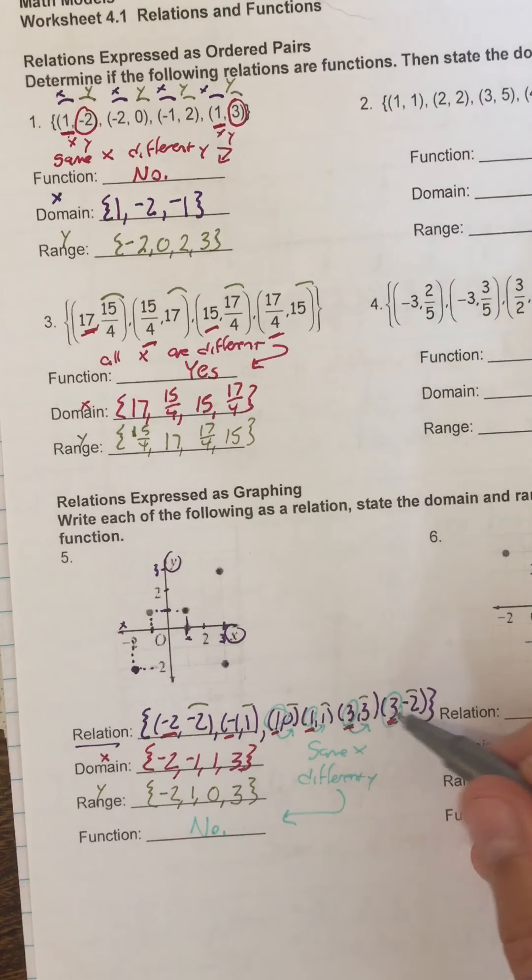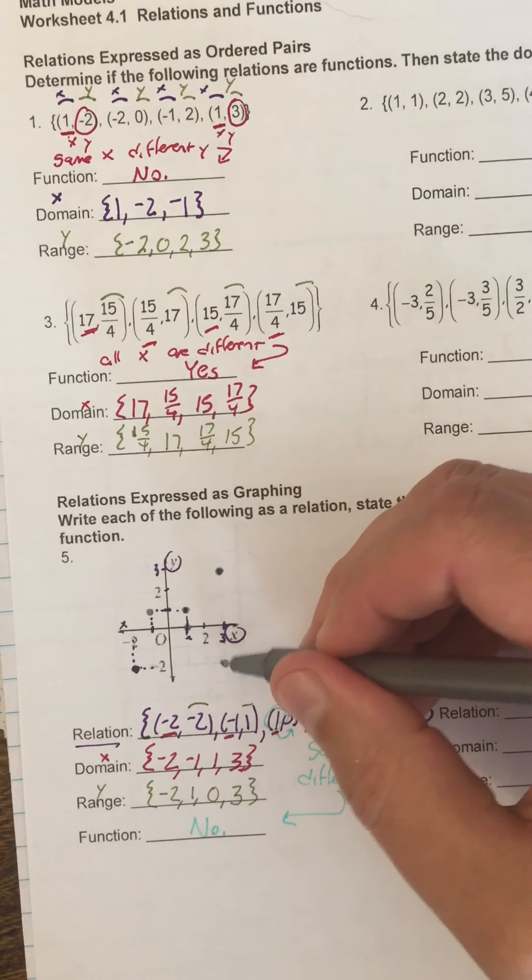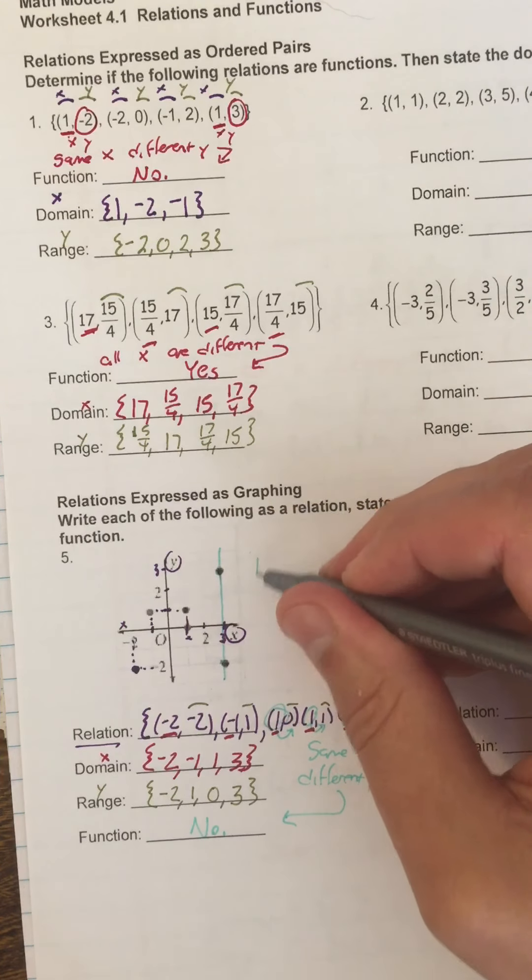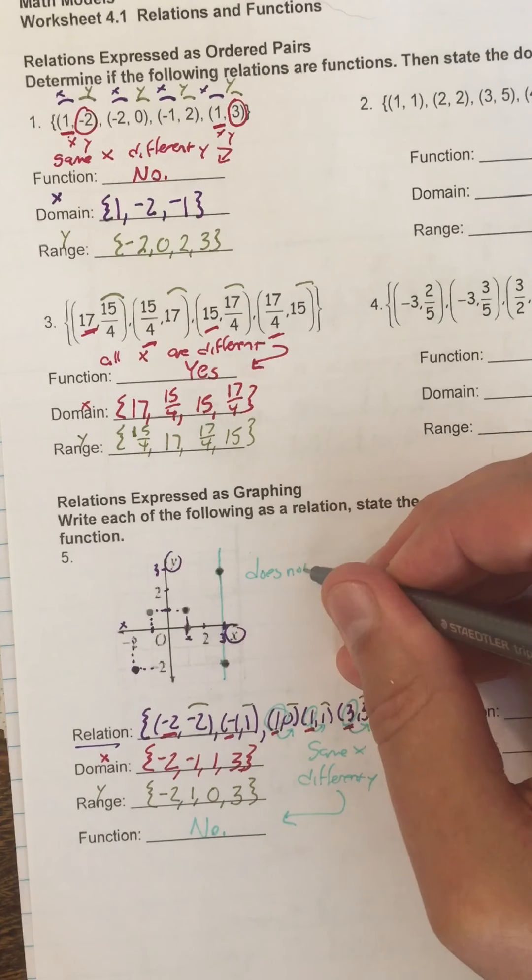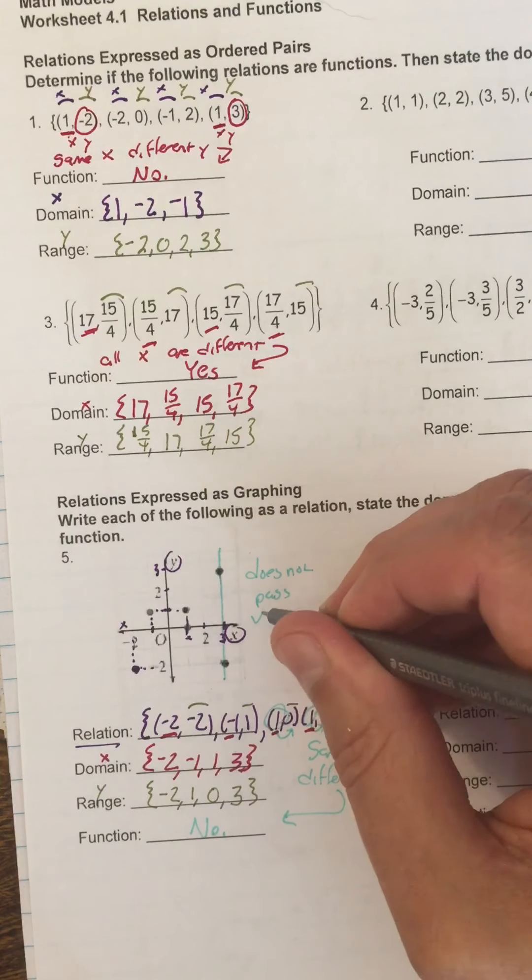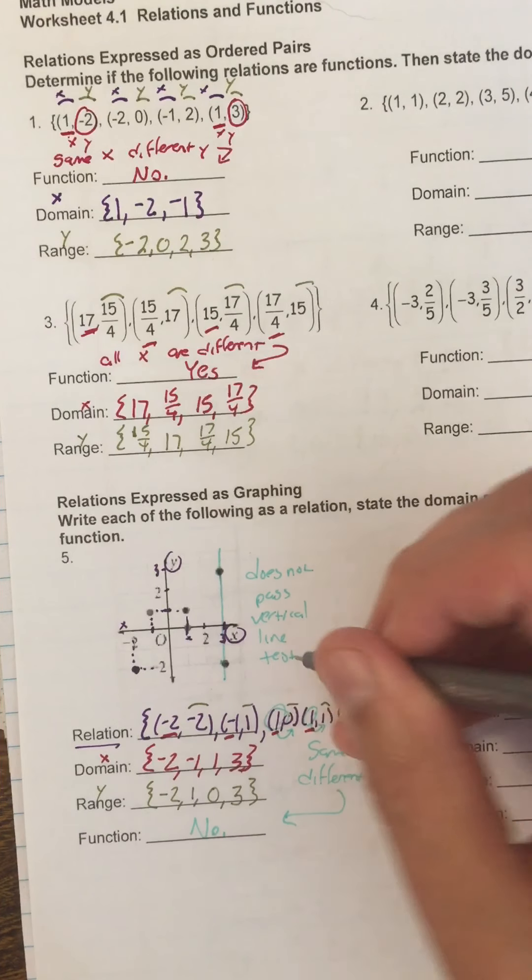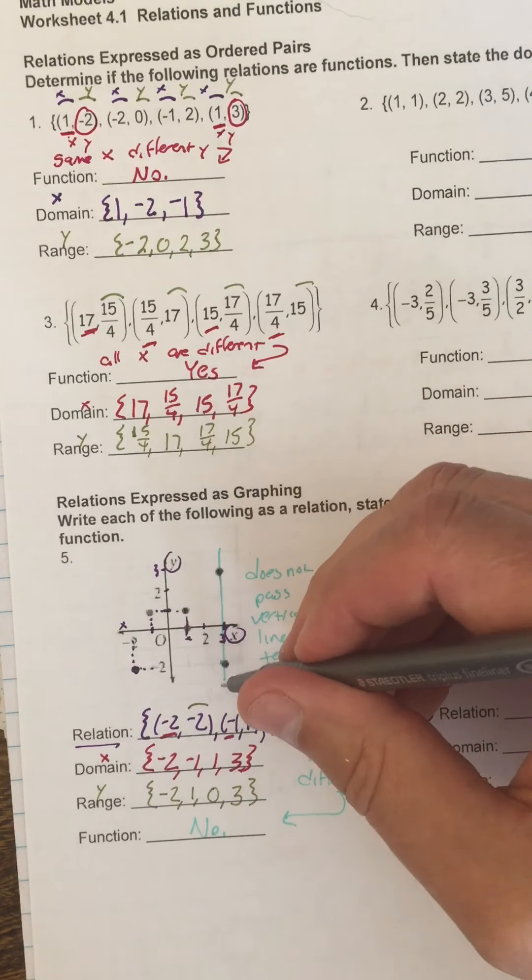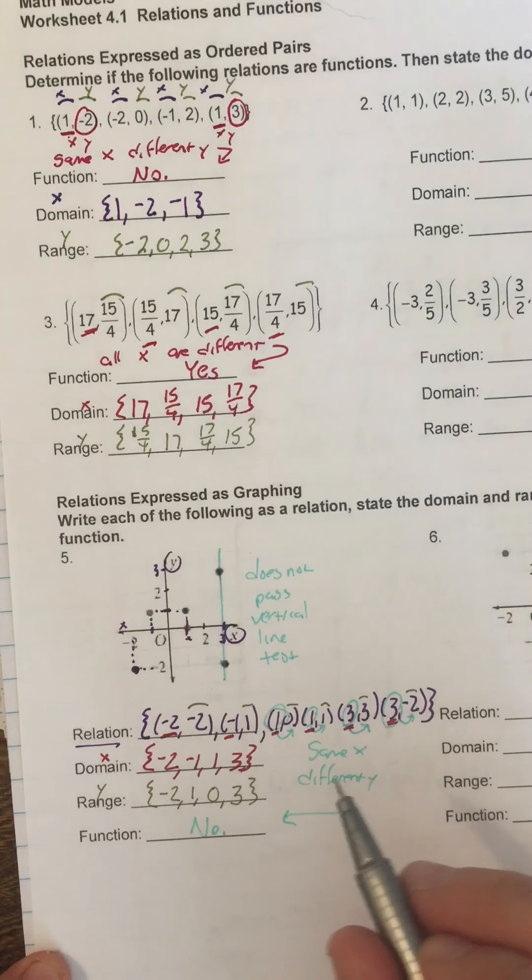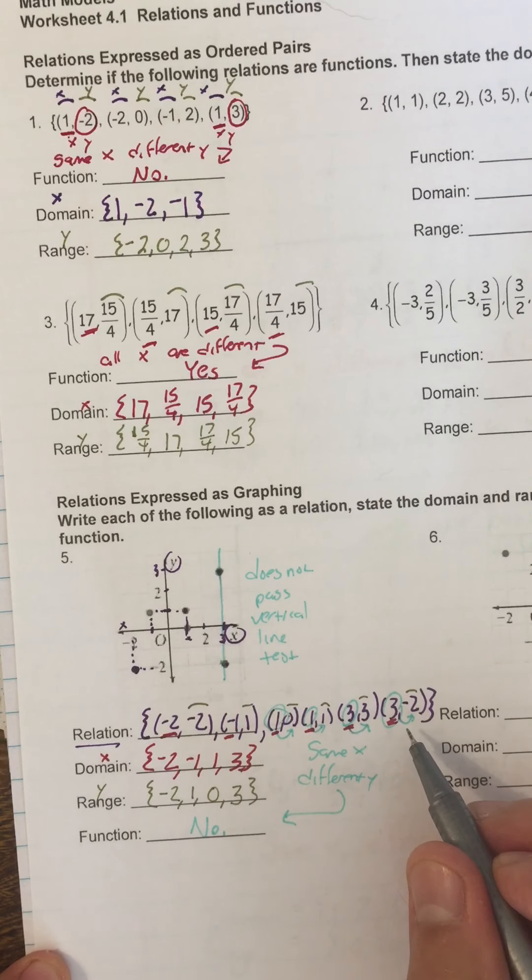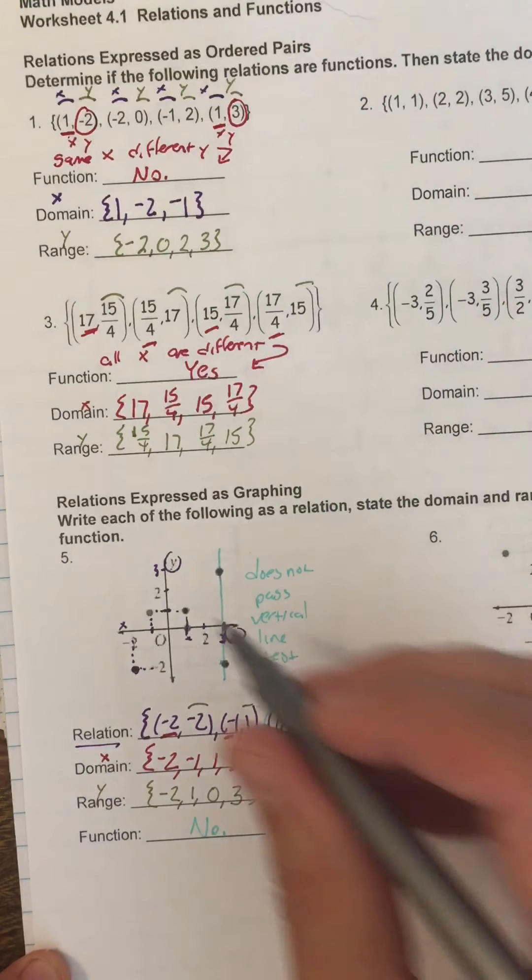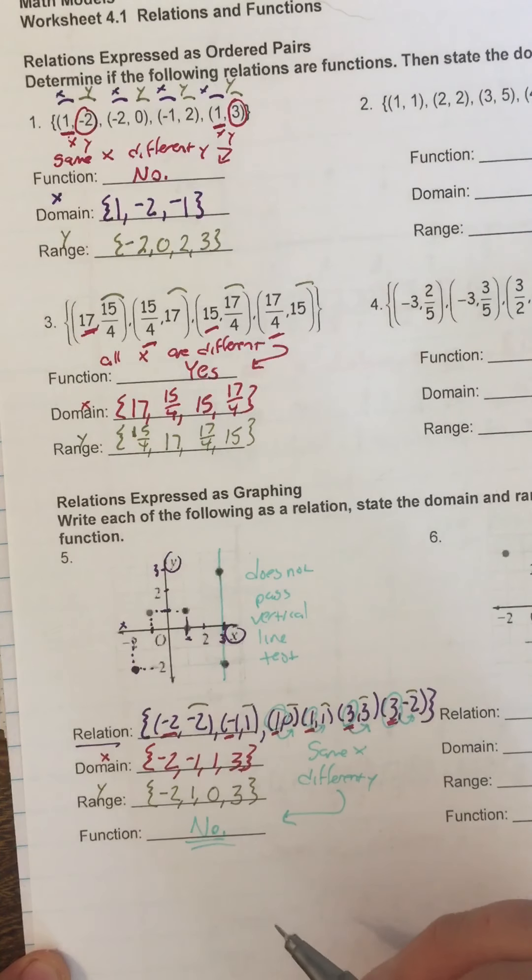I also see that here, but you only have to see it one time. But by the way, each one of these, 3, 3, and 3, negative 2, where are those? Here and here. They're points on a vertical line. So, also, does not pass vertical line test. So this graph does not pass the vertical line test. This relation has same x with different y's. Those are both ways that you know that this is not a function.